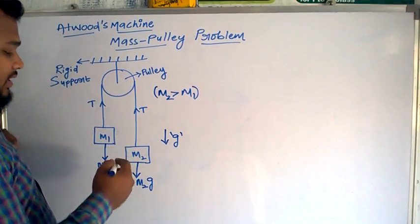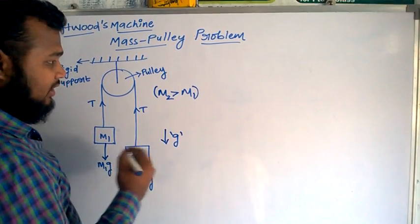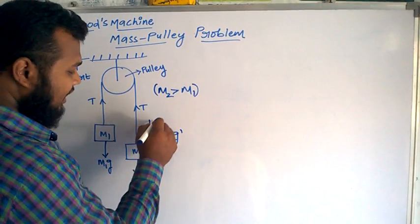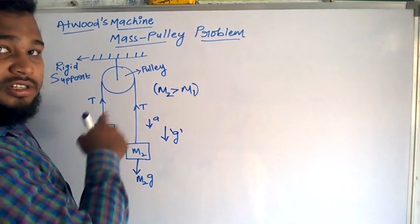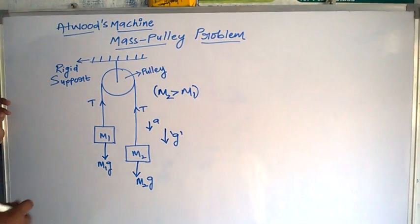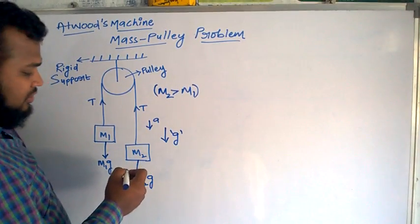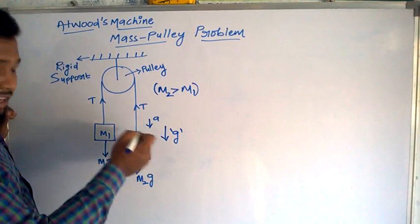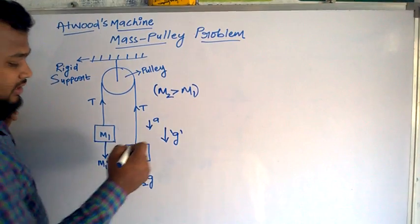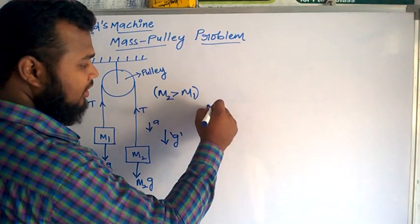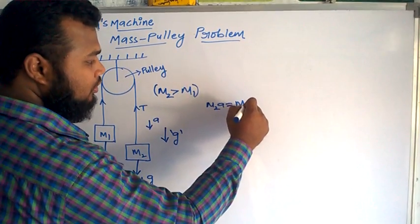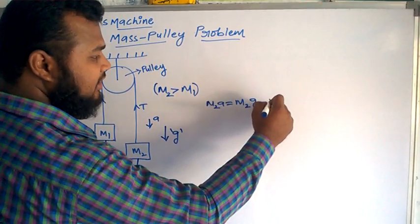The acceleration of the system can be drawn this way. Let's say it is moving down with acceleration a. The total system is moving with acceleration a. Then you can write the equation of motion: the force acting on m2 is given as m2a equals m2g minus T.